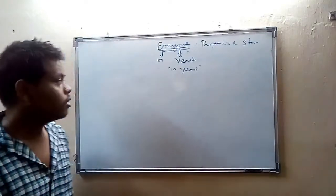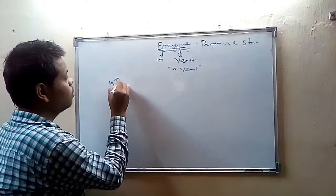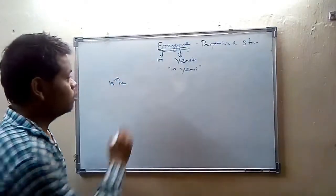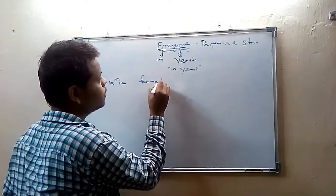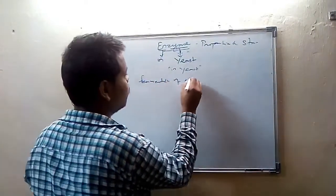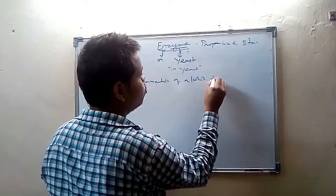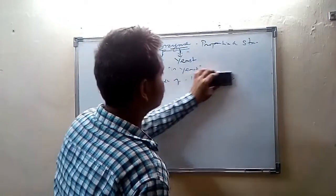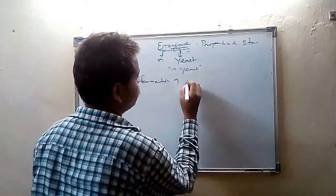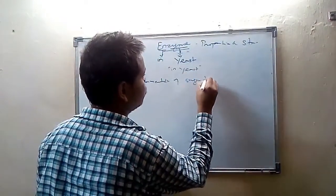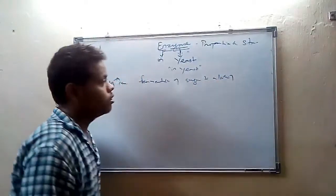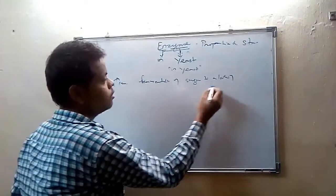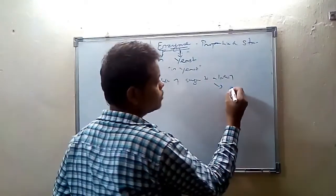Until the 19th century, it was thought that the fermentation of sugar to alcohol is possible only inside the living cell.